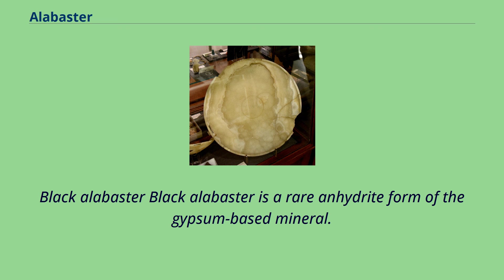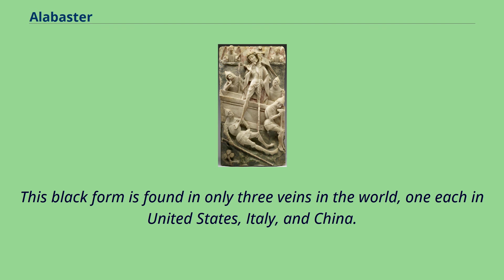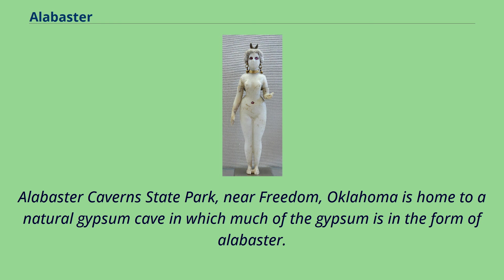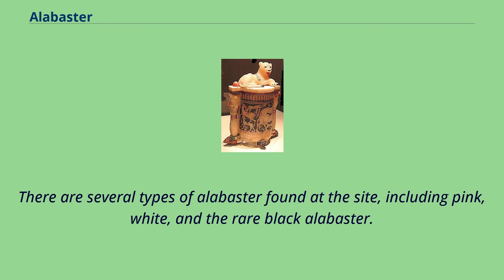Black alabaster is a rare anhydrite form of the gypsum-based mineral. This black form is found in only three veins in the world, one each in the United States, Italy, and China. Alabaster Caverns State Park, near Freedom, Oklahoma, is home to a natural gypsum cave in which much of the gypsum is in the form of alabaster. There are several types of alabaster found at the site, including pink, white, and the rare black alabaster.